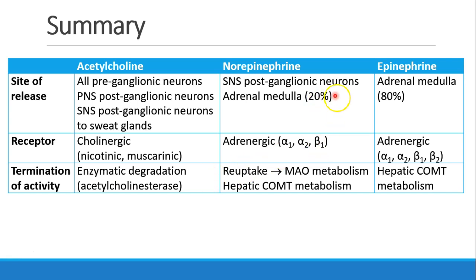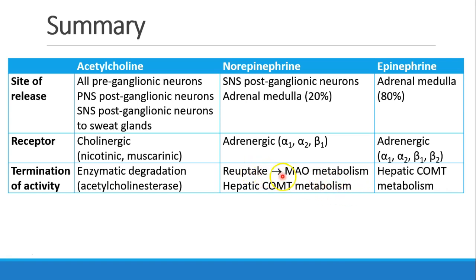As we said before, norepinephrine is the main neurotransmitter of the sympathetic system. It's also released from the adrenal medulla, and epinephrine is primarily released from the adrenal medulla. They both bind to adrenergic receptors, which we'll discuss a little bit later. Norepinephrine can undergo reuptake at the nerve terminal and then undergo metabolism by monoamine oxidase.